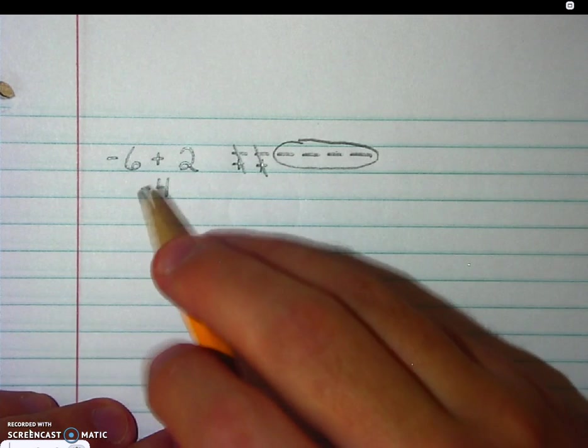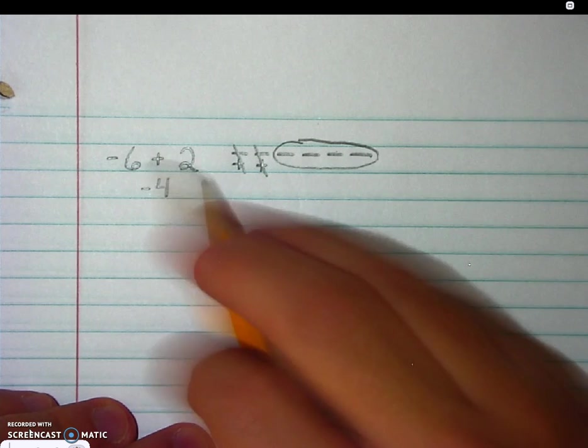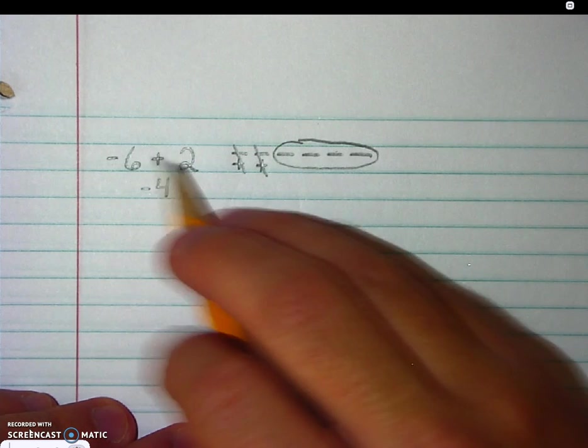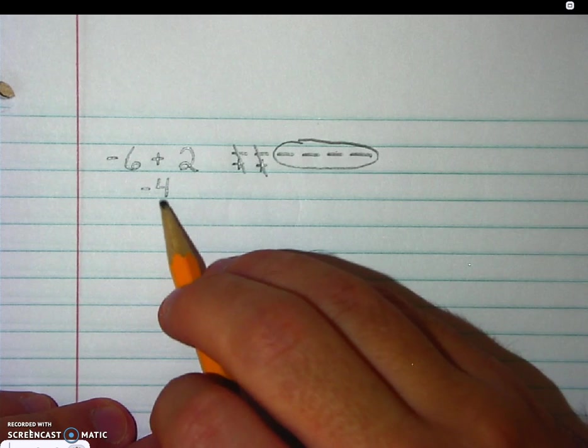Well, the absolute value of negative 6 is 6, because it's 6 bases from 0. And the absolute value of 2 is 2. You can do the subtraction 6 minus 2, and that will get you to 4.